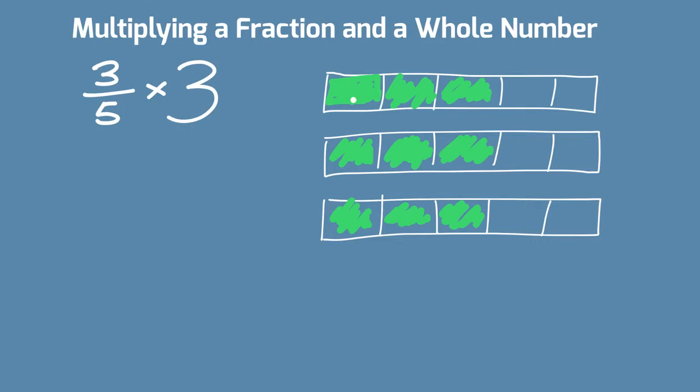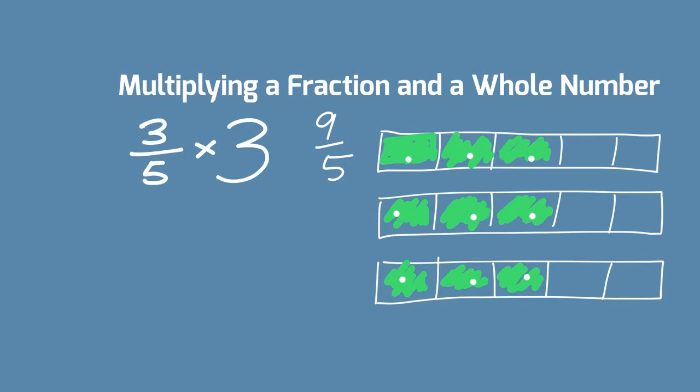We've got 1, 2, 3, 4, 5, 6, 7, 8, 9 fifths. Again, something starts to look familiar. What do we know about 3 and 3 and 9? We know that 3 times 3 equals 9.